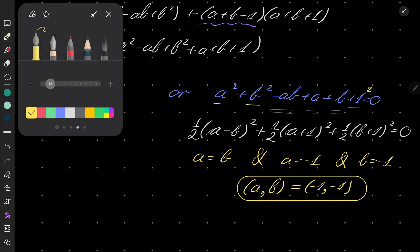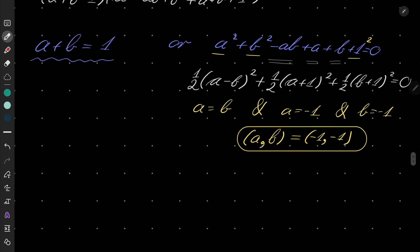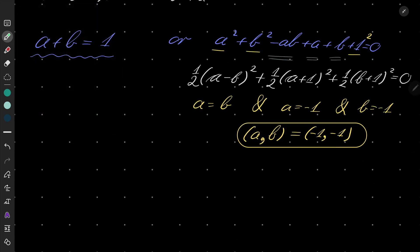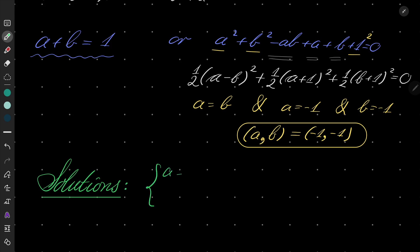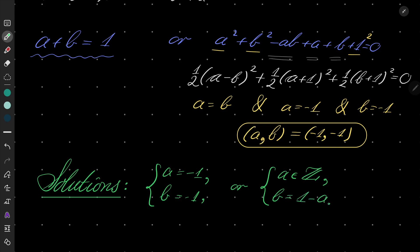Okay, and now here we have our solutions. The solutions are as follows: either a and b equals minus 1, minus 1 — that's one possibility — or a is an arbitrary integer and b equals 1 minus a. So we have, in fact, infinitely many solutions. The tricky part was the factorization. You very often in these types of problems find that the tricky part is factorization.